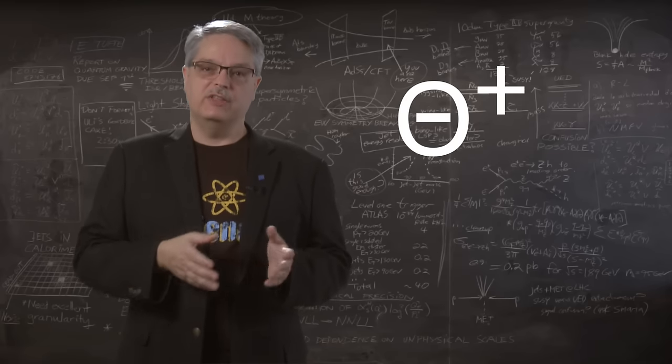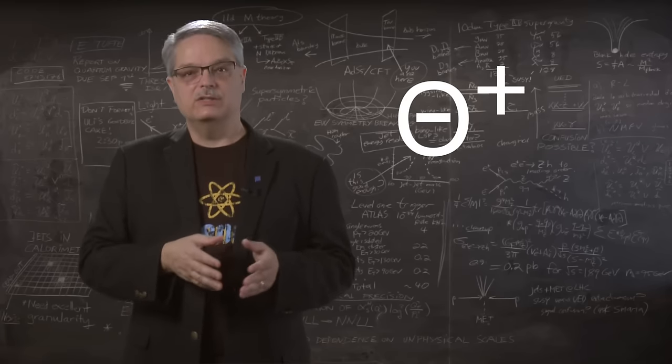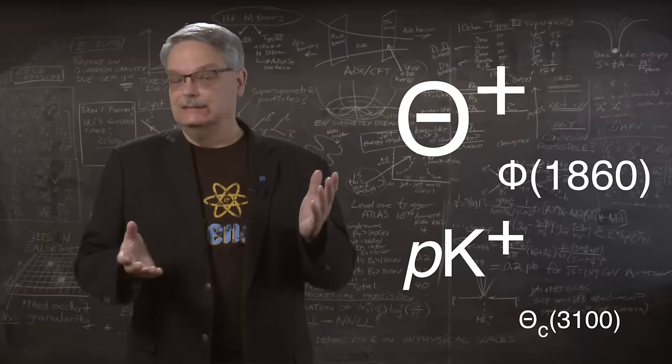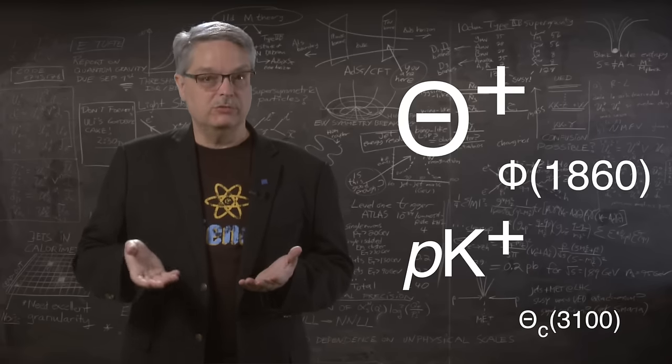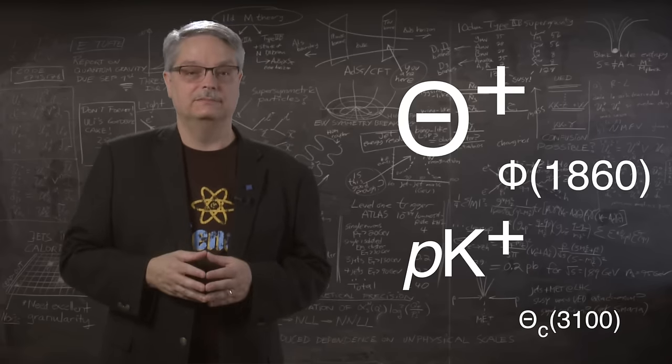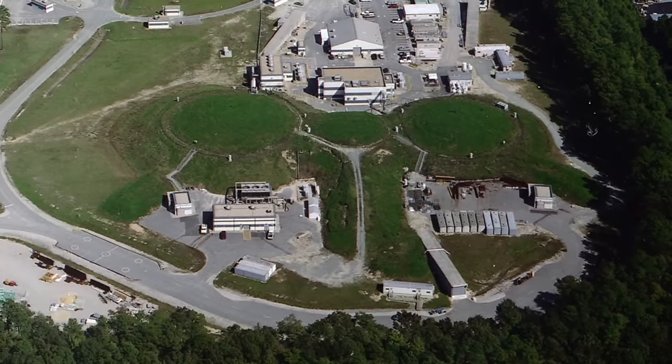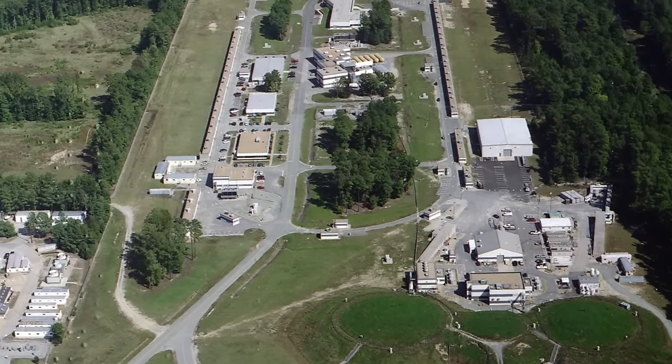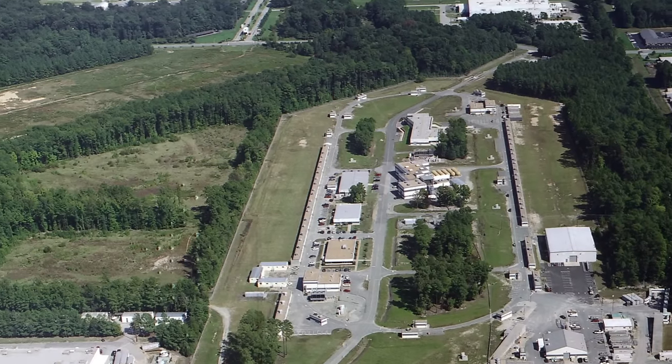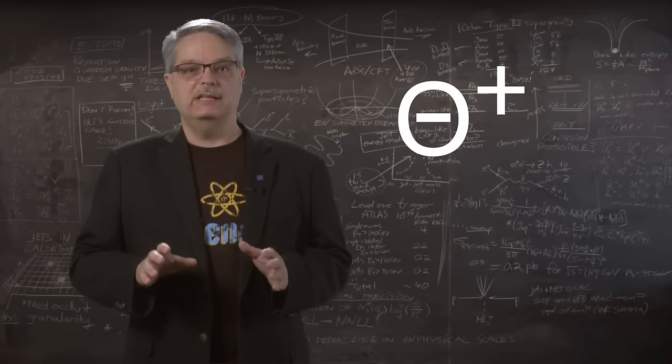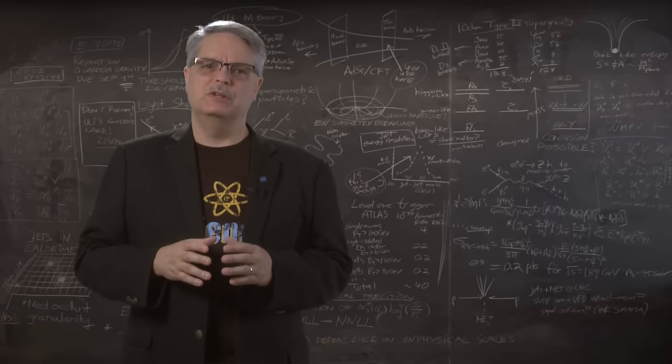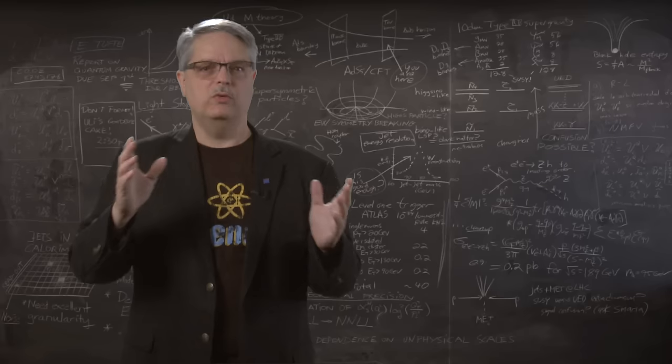With the announcement of the theta plus, other scientists dug through their data and found other objects that were other possible pentaquarks. On the other hand, other scientists dug through different data and found nothing. It was an exciting couple of years until 2005 when physicists at the Thomas Jefferson National Accelerator Facility in Newport News, Virginia repeated the original measurement with far more data and found no evidence for the theta plus. Pentaquarks appeared to have been a subatomic will-o'-the-wisp.